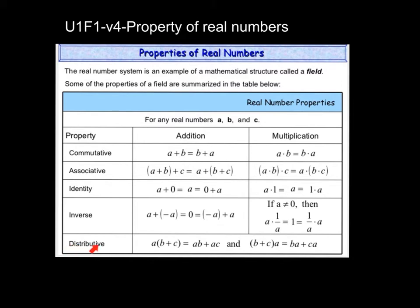And finally, distributive property. This is what I like to call the sharing property, where you have a number or variable outside. You're going to want to multiply A by both B and C. So it's like AB plus AC. You could also have the number or variable behind the parentheses, and it still works the same way.